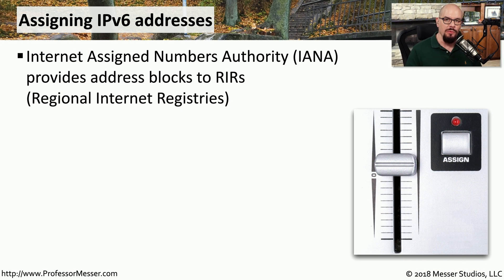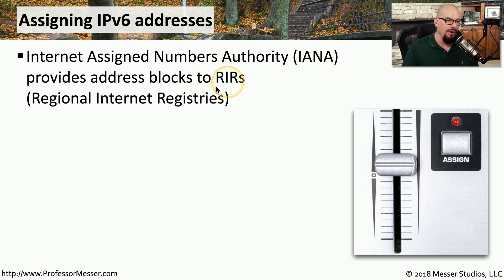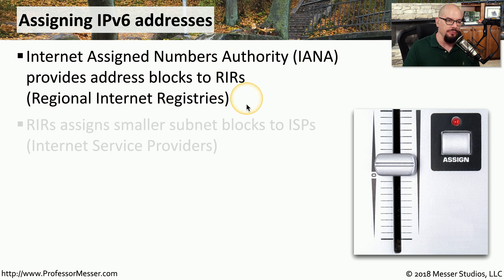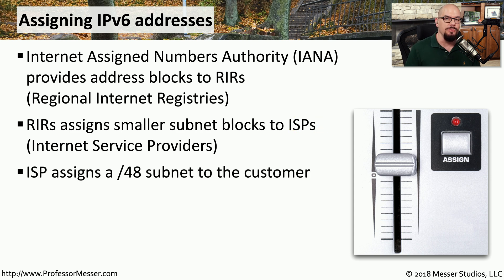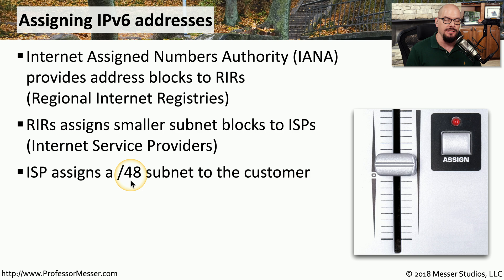On the internet, we have a formal process for how IP address ranges are assigned. This usually starts with the Internet Assigned Numbers Authority, or the IANA, and they provide blocks of IP addresses to RIRs, which are regional internet registries. The regional internet registry then assigns subnets of those blocks to individual internet service providers, and the ISP then provides you, the customer, with an IPv6 address associated with a slash 48 subnet.